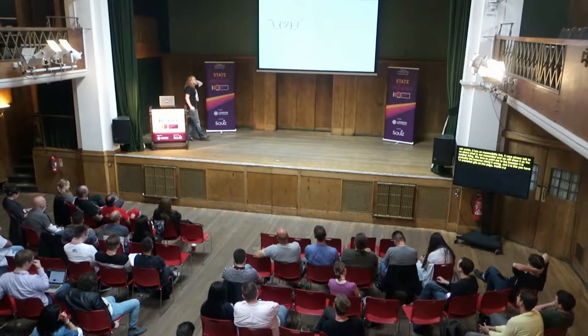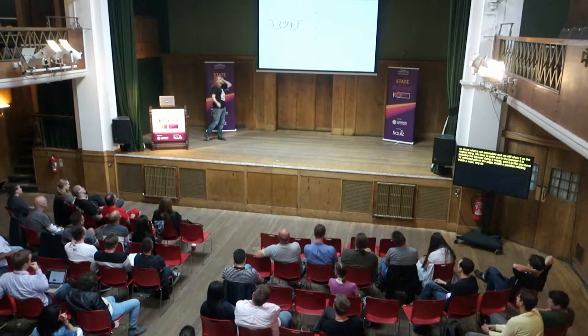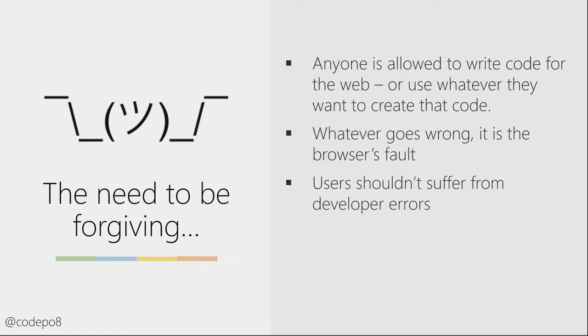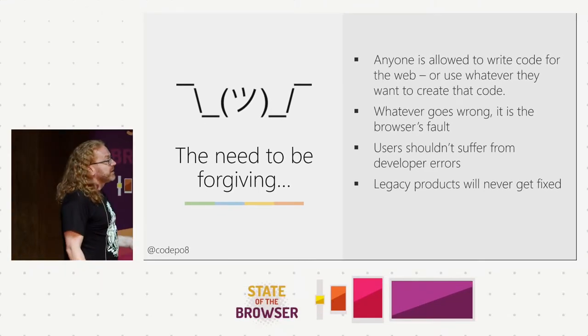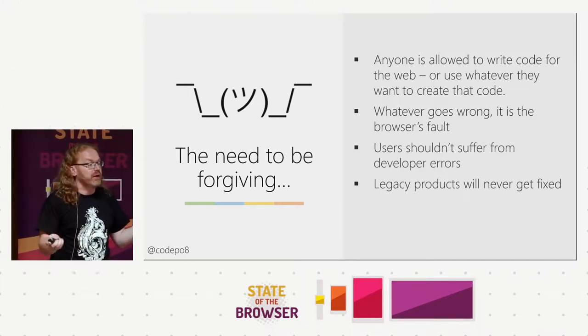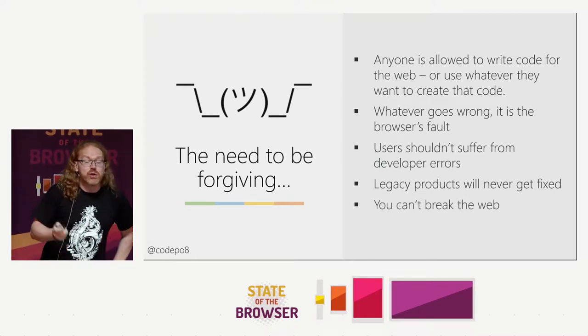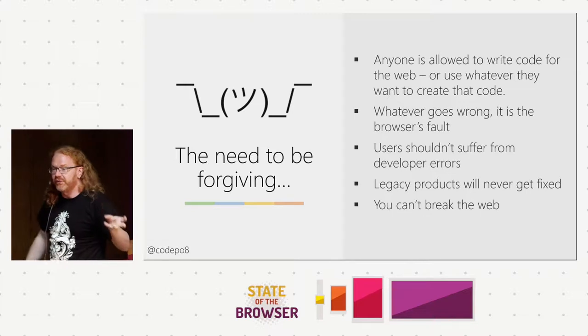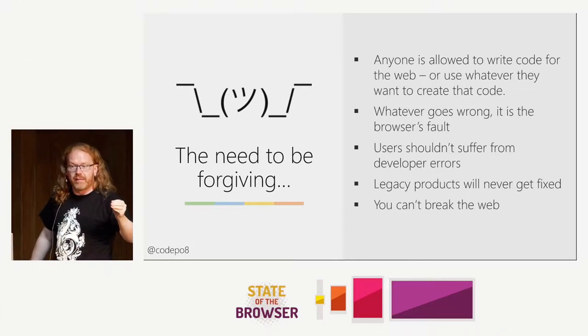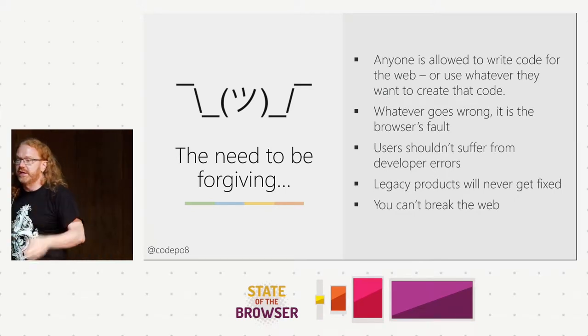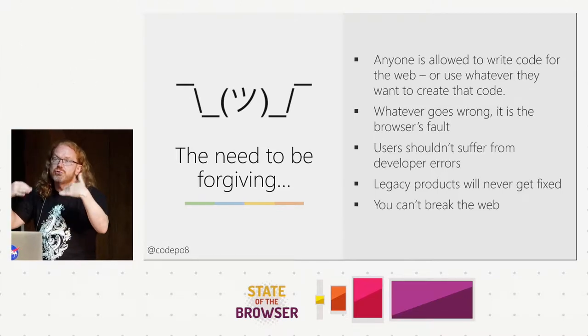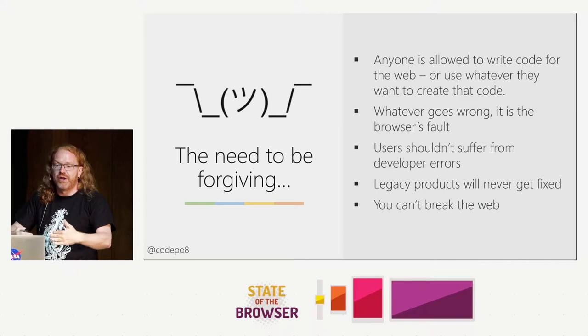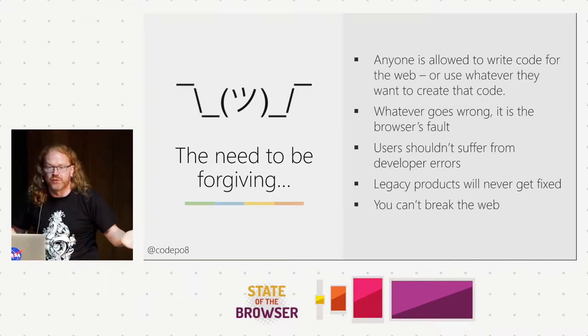You've got 12 animated GIFs on this page inside a parallax rotating cube — why do you think that is slow? Users shouldn't suffer from developer errors. That's why HTML and CSS have always been forgiving; when you do something wrong, it goes on. JavaScript, you do one line wrong and it says that's the end of the world. Legacy products will never get fixed. Outdated browsers will be out there and won't get replaced no matter how free your browser is. You can't break the web — browsers have to be backwards compatible. When we innovate things, we can never take them away again, because then you get CSS workarounds we had to do in Edge to make the web not break.